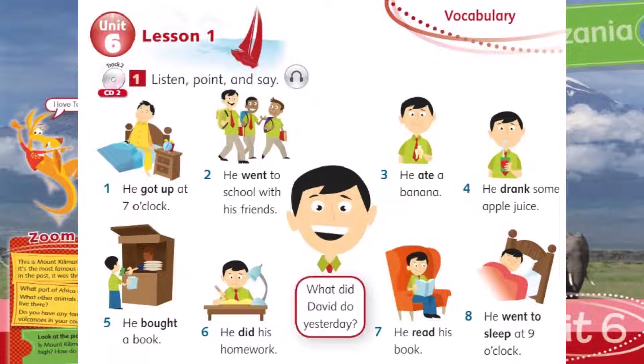Seven: he read his book. Eight: he went to sleep at nine o'clock.